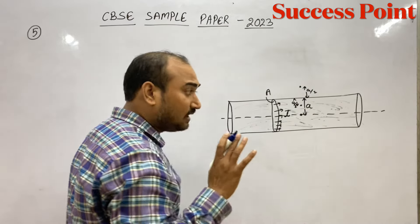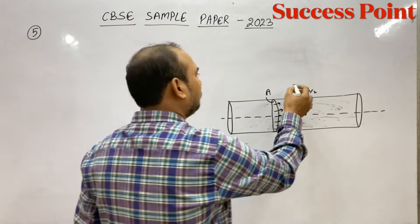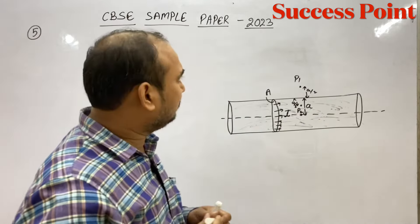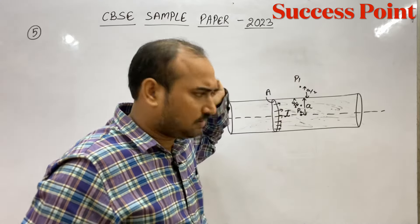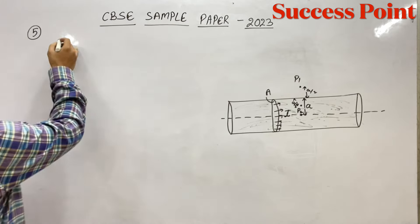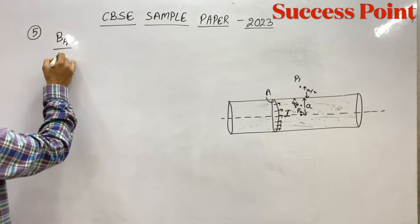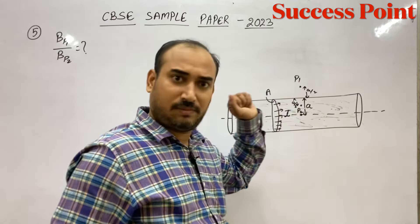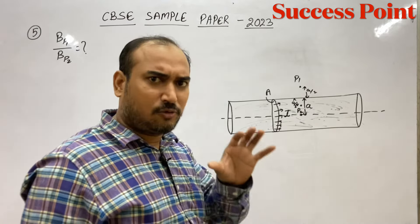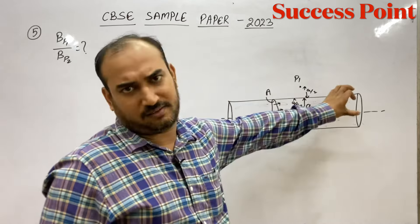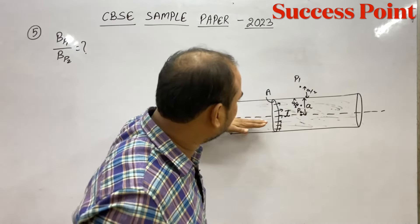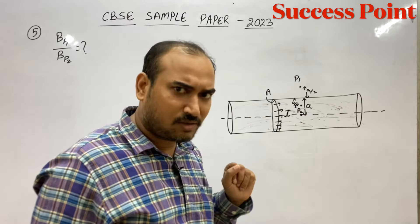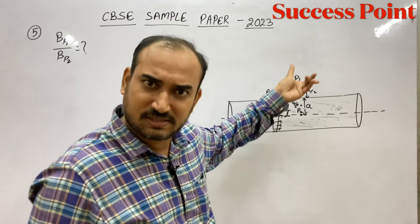इसको हम P1 point मान लें, इसको हम P2 point मान लें। तो हमको BP1 upon BP2 बताना है — P1 point पर magnetic field upon P2 point पर magnetic field। बच्चों, आपको पता होना चाहिए कि अगर कोई thick wire है तो इसके center से अंदर और बाहर किसी distance पर magnetic field का formula क्या होता है?